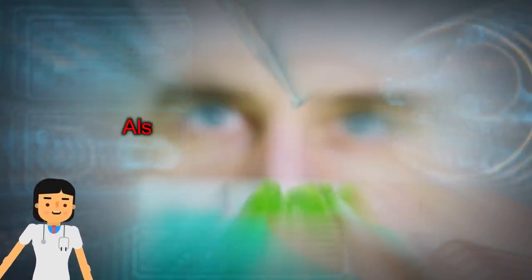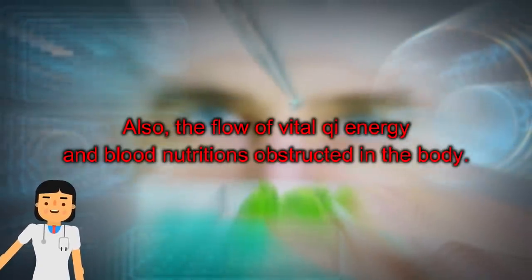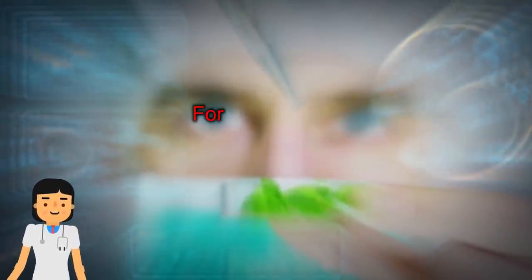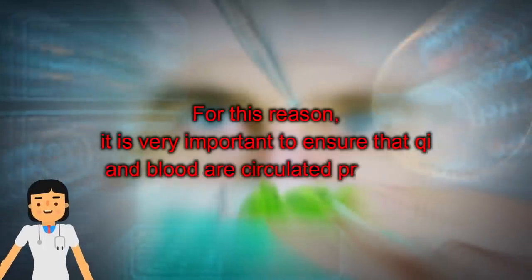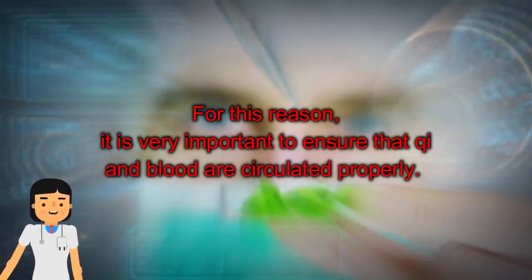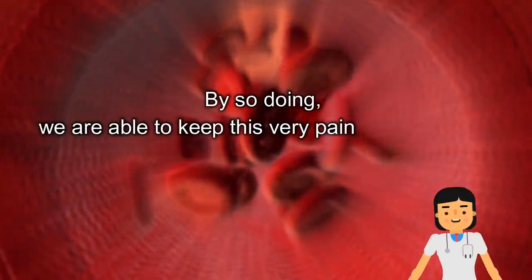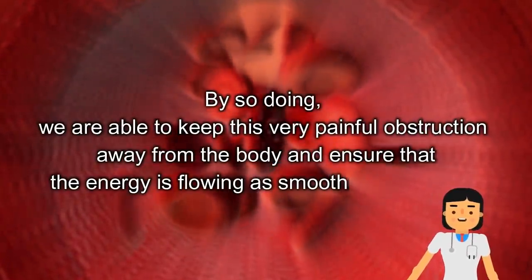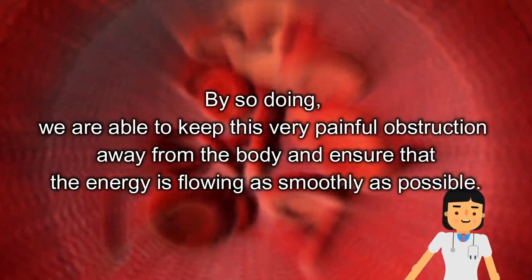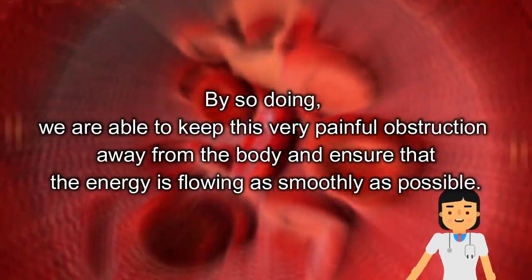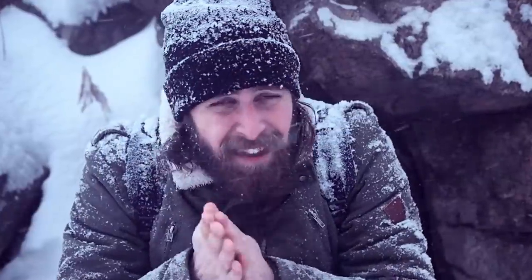Also, the flow of vital chi energy and blood nutrition is obstructed in the body. For this reason, it's very important to ensure that chi and blood are circulated properly. By doing so, we're able to keep this very painful obstruction away from the body and ensure that the energy is flowing as smoothly as possible.